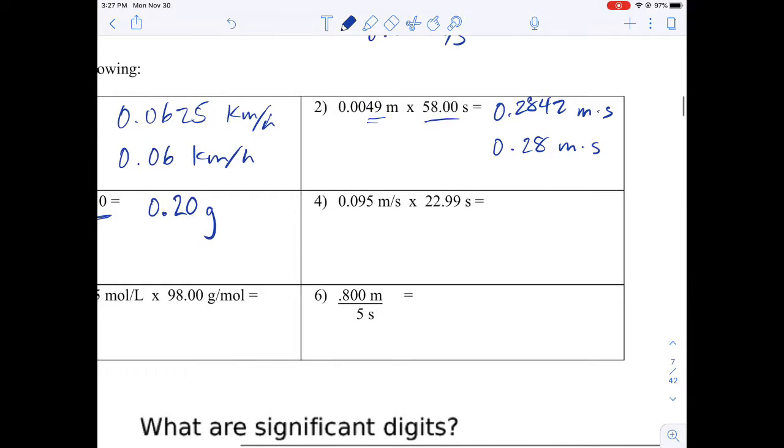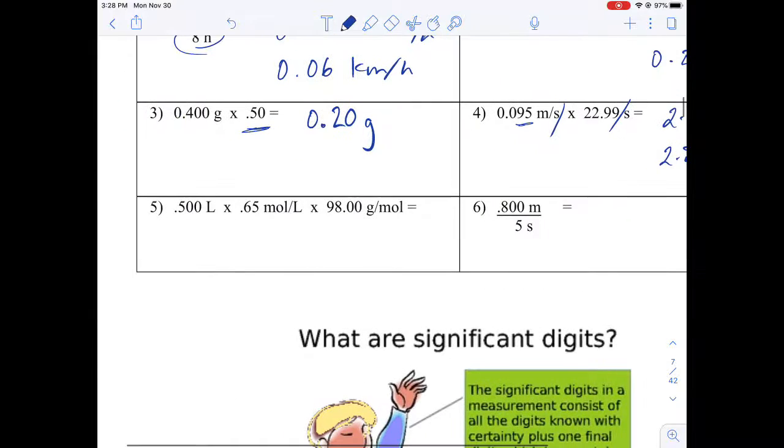But you can see I've got two sig digs, so I need to have that value as well because now I've got two sig digs in my answer. Now I've got 0.095 times 22.99, and in this case my calculator gives me 2.18405 and this will be meters because meters times seconds, the seconds will cancel out. But I have two sig digs here, so this is going to be 2.2 meters.